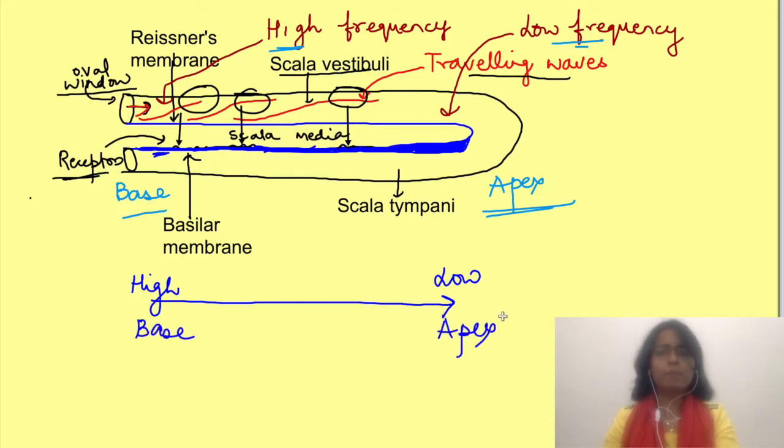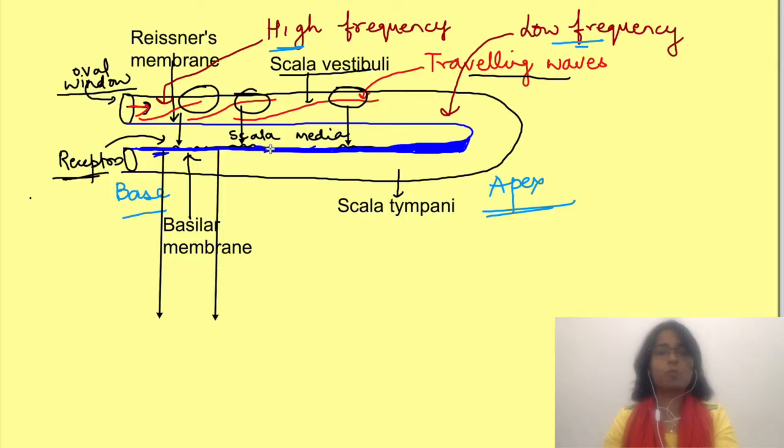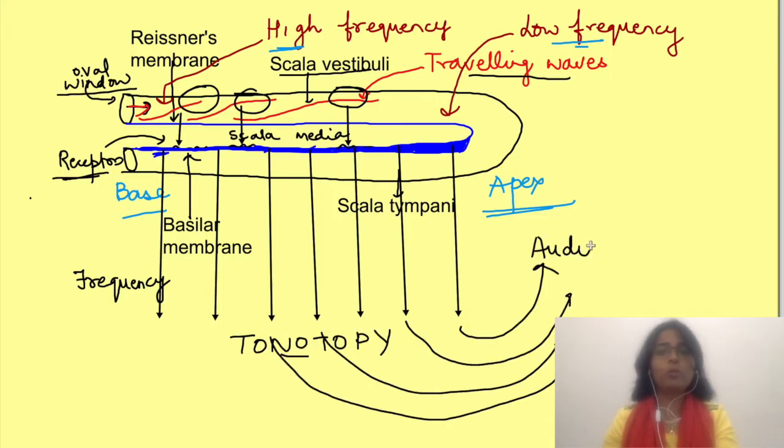Information from a particular region of cochlea represents a certain frequency. This representation of frequency in space—that is, along the region of the basilar membrane—is known as tonotopy. This tonotopy continues throughout the auditory pathway until the auditory cortex.